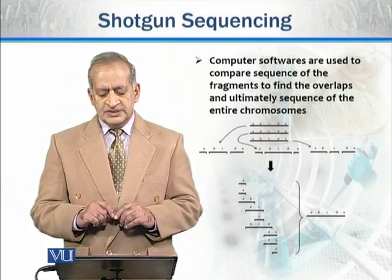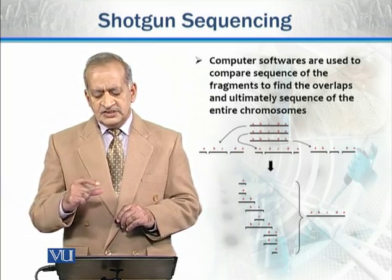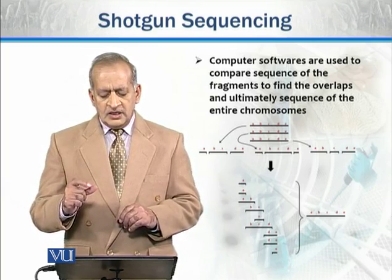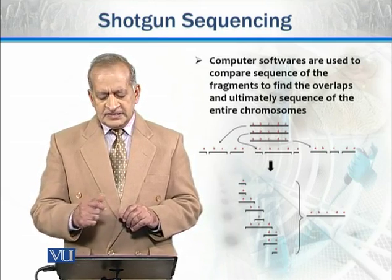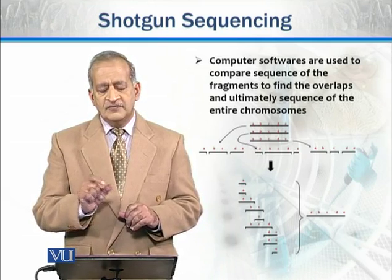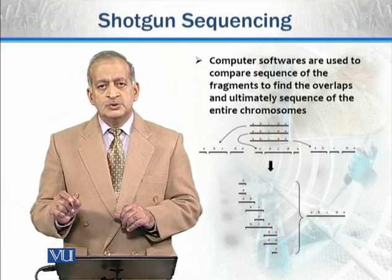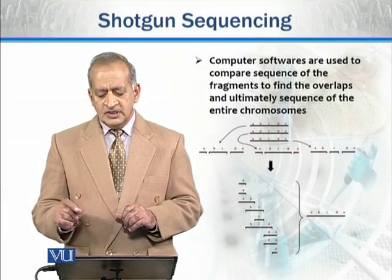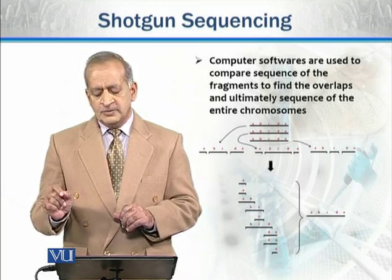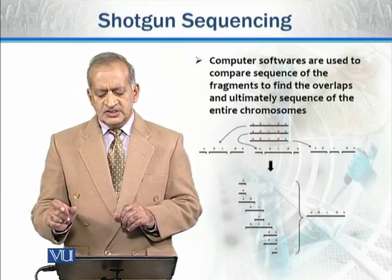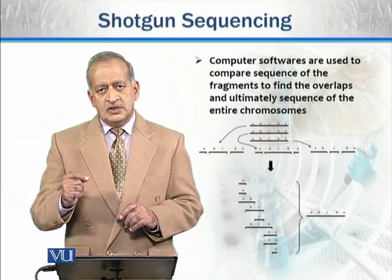Here we can see in the diagram that if we have a sequence of genes, we can divide them into fragments. For example, 'a' can be a fragment, 'bc' can be a fragment, and 'de' can be a fragment. The possible combinations can differ — 'a' can be a fragment, 'bc' can be a fragment, and 'e' can be a fragment. Each fragment is then sequenced by the chain termination method.